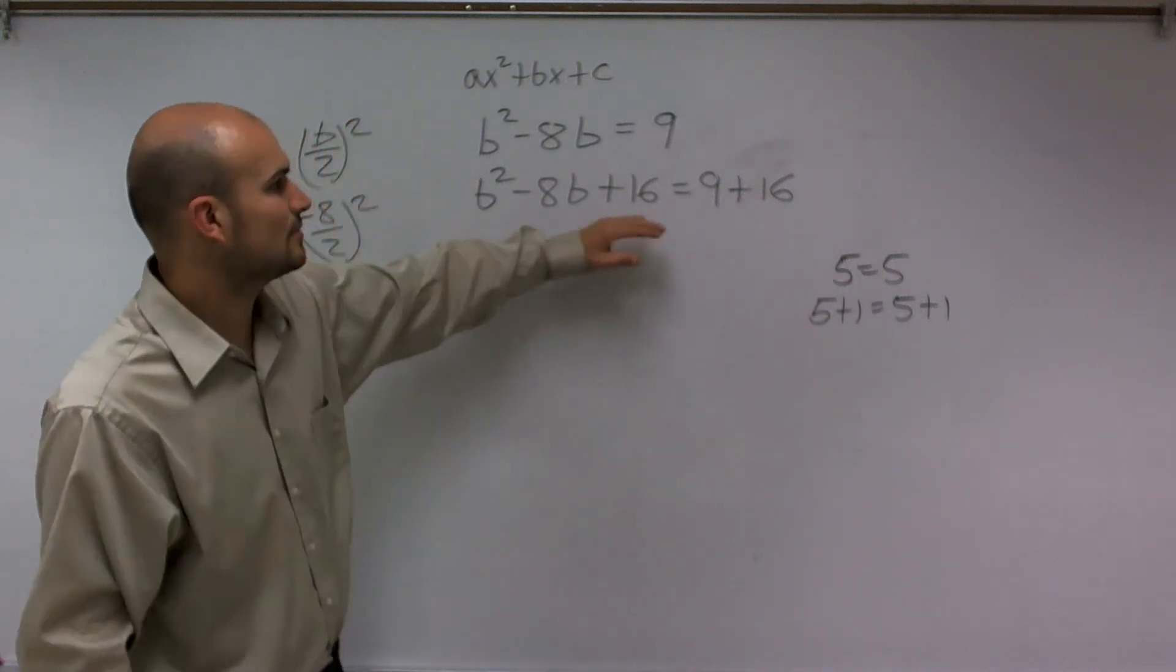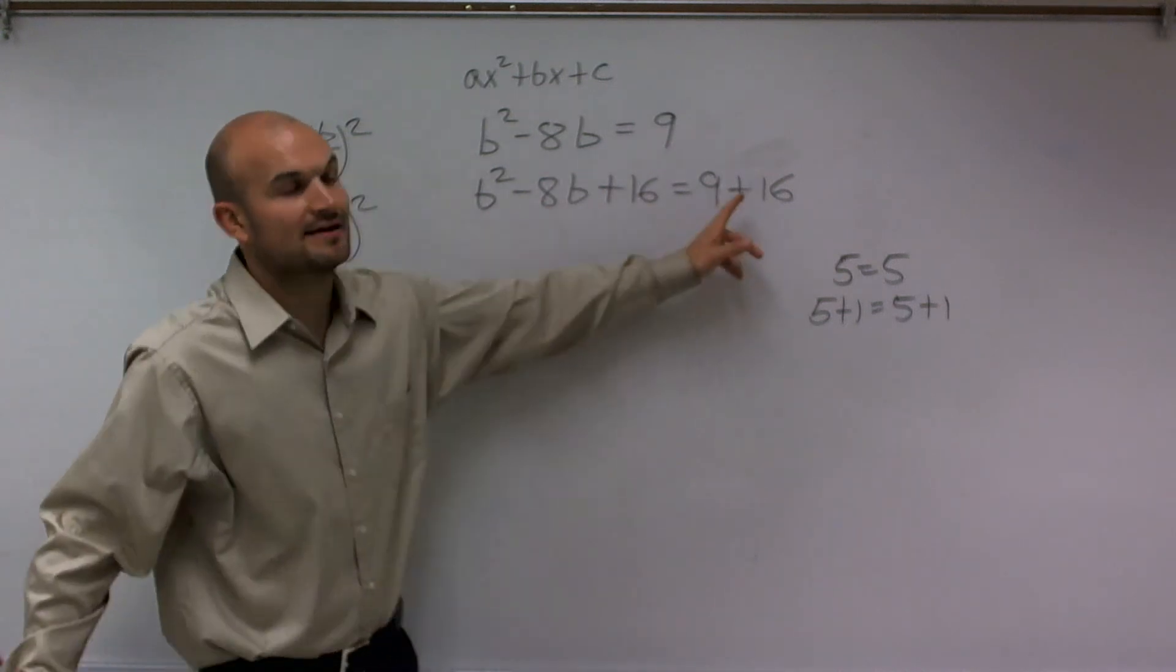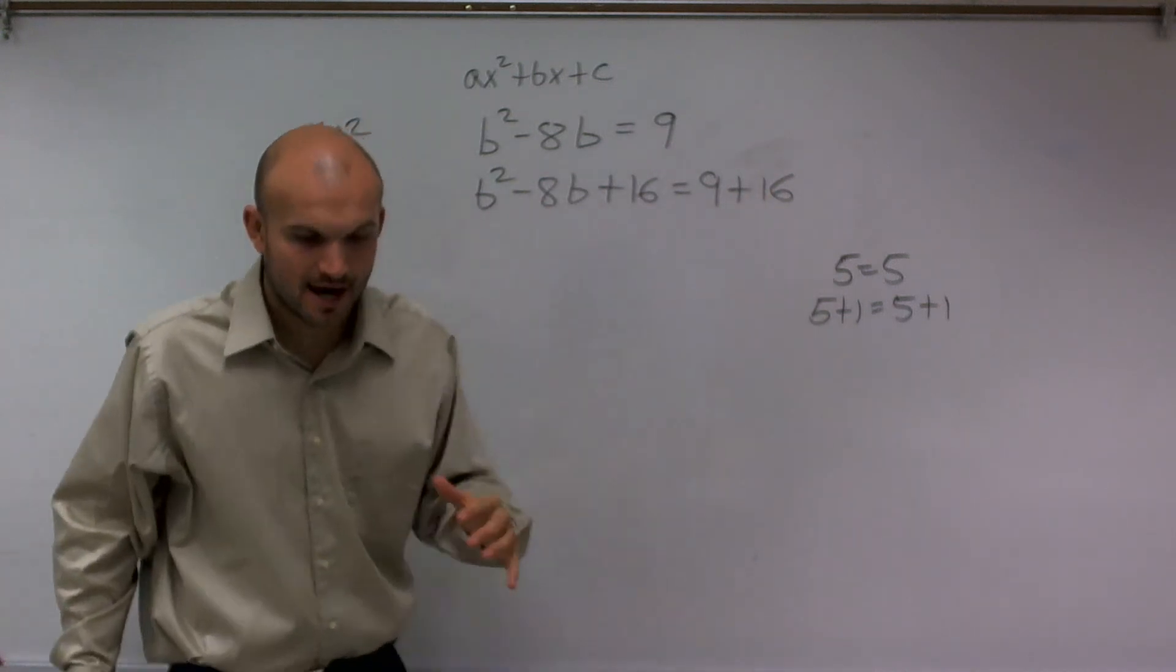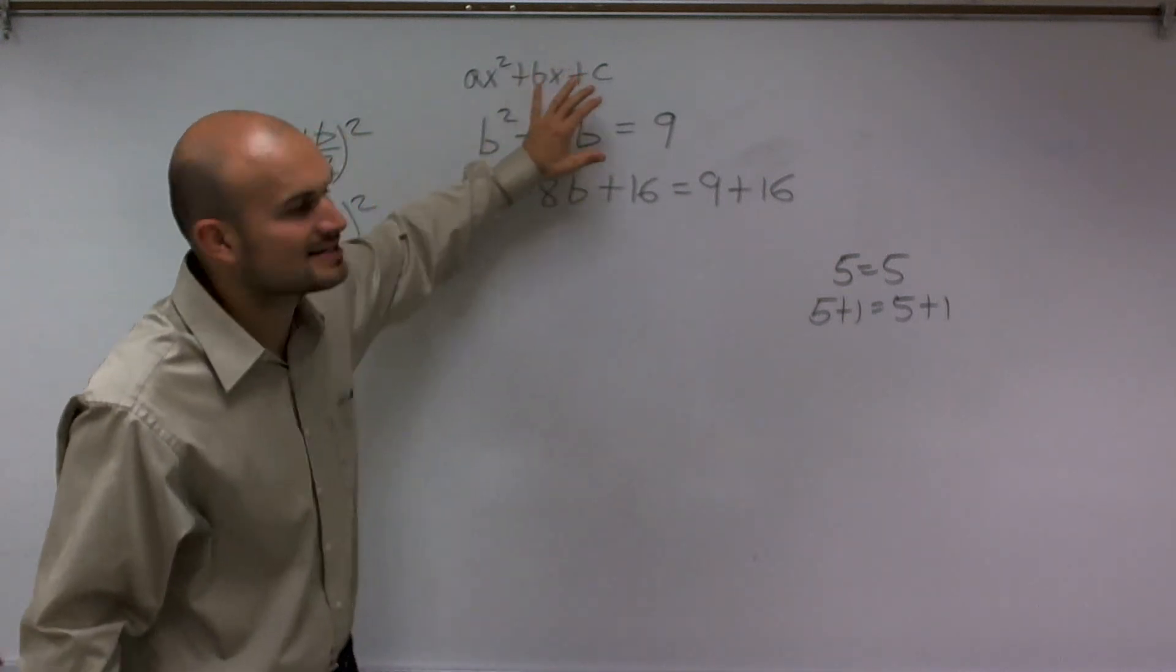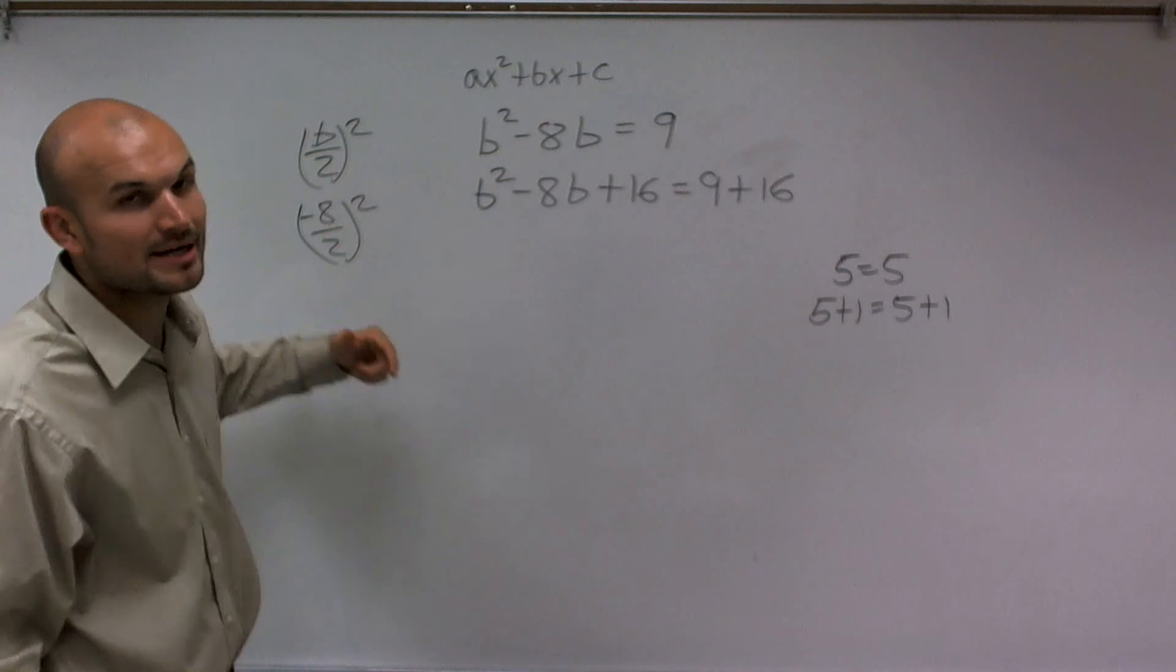That's exactly what I'm going to do here. Since I'm adding 16, I have to add 16 on the other side. Why do I want to add 16? Why is this 16 so special? Why is this b divided by 2 so special?